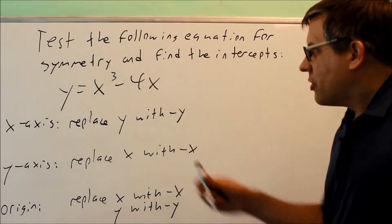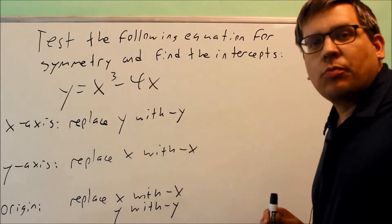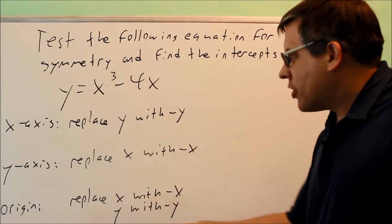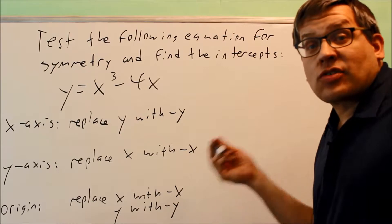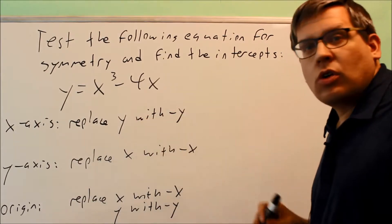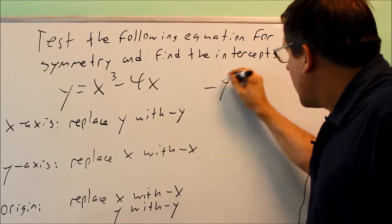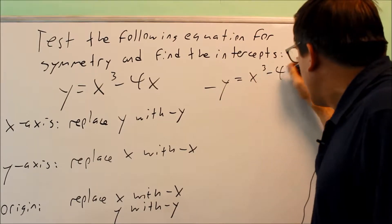We're going to test this one for symmetry. y equals x cubed minus 4x. Here's a different test right here. We want to find out if it has x-axis symmetry. You replace y with negative y. We do negative y equals x cubed minus 4x.